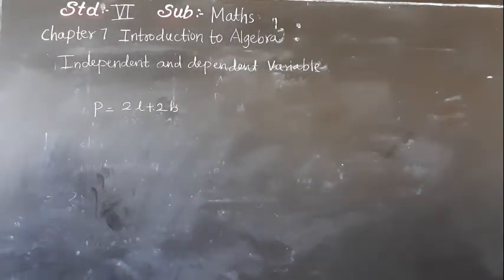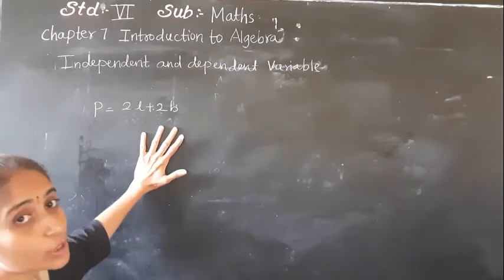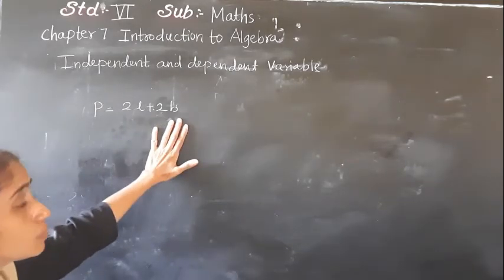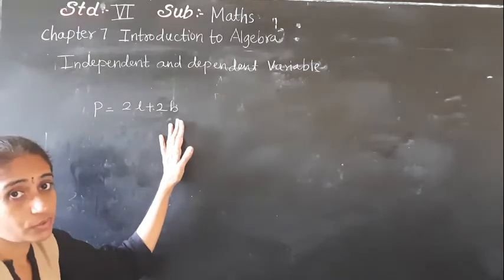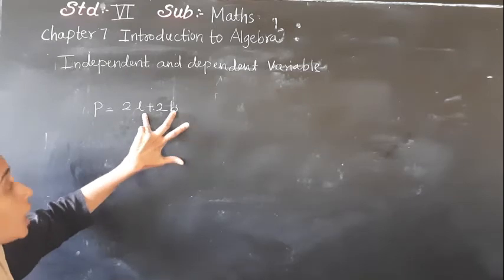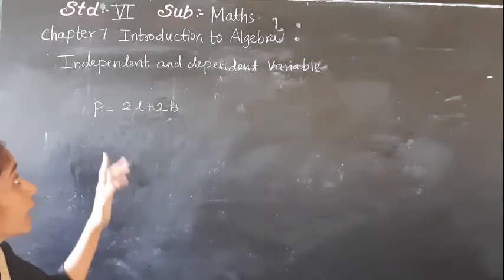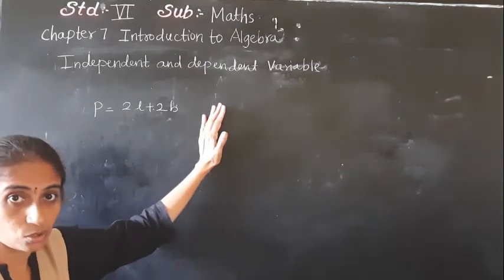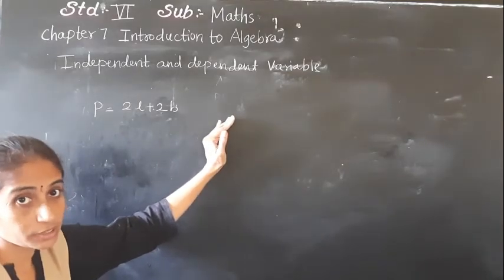Now let's learn independent and dependent variables. P means perimeter. The rule we generated for the perimeter of a rectangle is 2L plus 2B. Here, 2 variables are given: L and B. These are not dependent — they are independent. The value of one variable does not depend on the value of another variable; it has its own value.